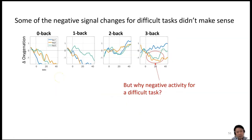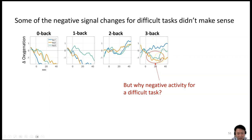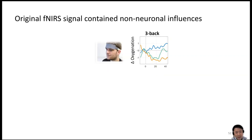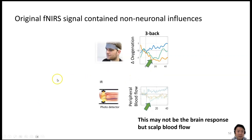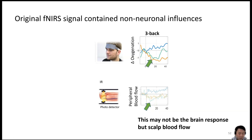There was one interesting problem. One particular subject showed the expected increase in slope for 0-Back, 1-Back, and 2-Back — but then at 3-Back, where we expected the highest slope, there was a big dip that hurt our anticipated high slope. It turned out this pattern was also shown in the peripheral blood flow measured by PPG amplitude, which showed the same pattern. This suggested that the original fNIRS measurement may have been contaminated by external influences such as scalp or skin blood flow that are not from the brain itself.